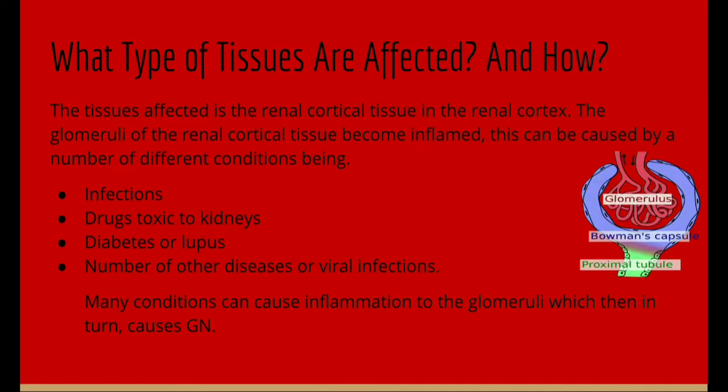The tissue affected is the renal cortical tissue and the renal cortex. The glomeruli of the renal cortical tissue become inflamed. This can be caused by a number of different conditions, including infections, drugs toxic to the kidneys, diabetes or lupus, or a number of other diseases or viral infections. Many conditions can cause inflammation to the glomeruli, which then in turn causes GN.